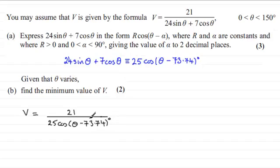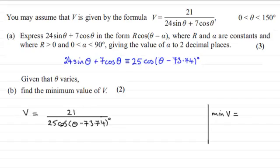You get quite a lot of these problems where you have to find maximum and minimum values, and they are all much the same. With this one we've got a fraction, and whenever you've got a fraction and are asked to work out the minimum value — in this case the minimum value of V — we want to make the top of the fraction as small as possible and the bottom as large as possible. The top is a constant, so we can't do much about that; it's just going to be 21. But because theta varies, we can make the denominator a maximum value — we want to maximise the denominator.